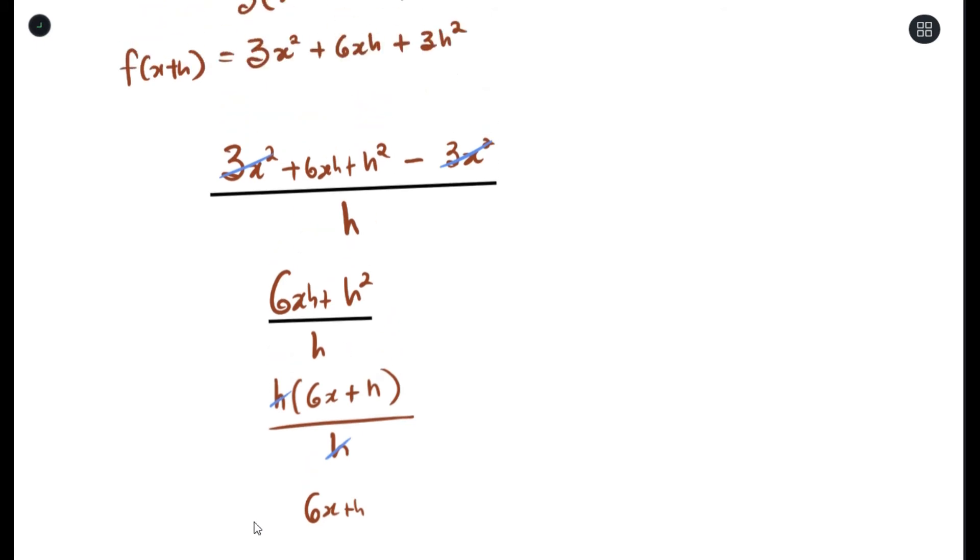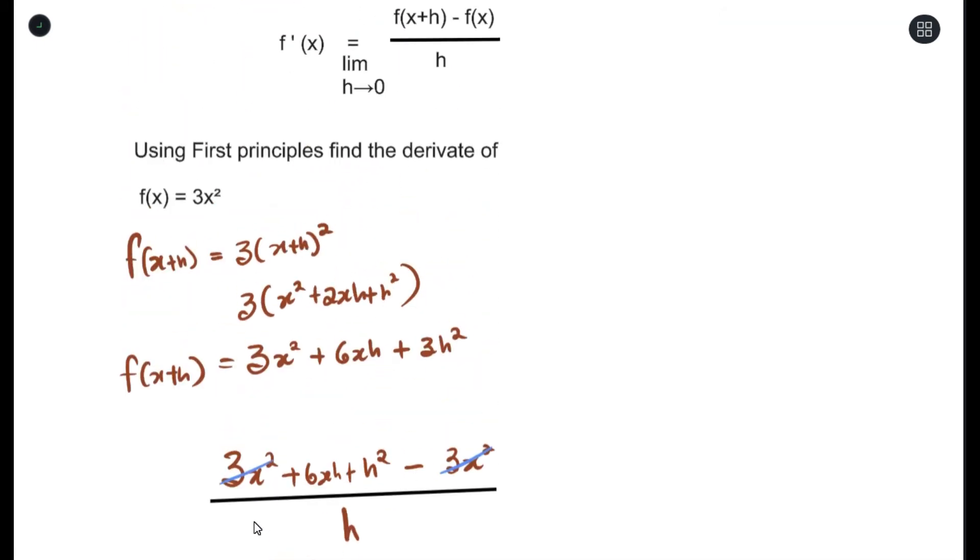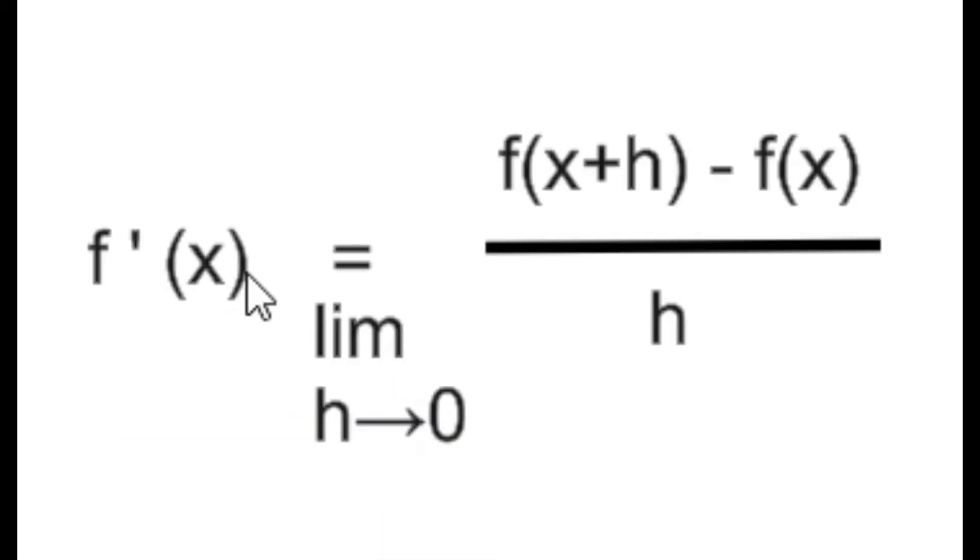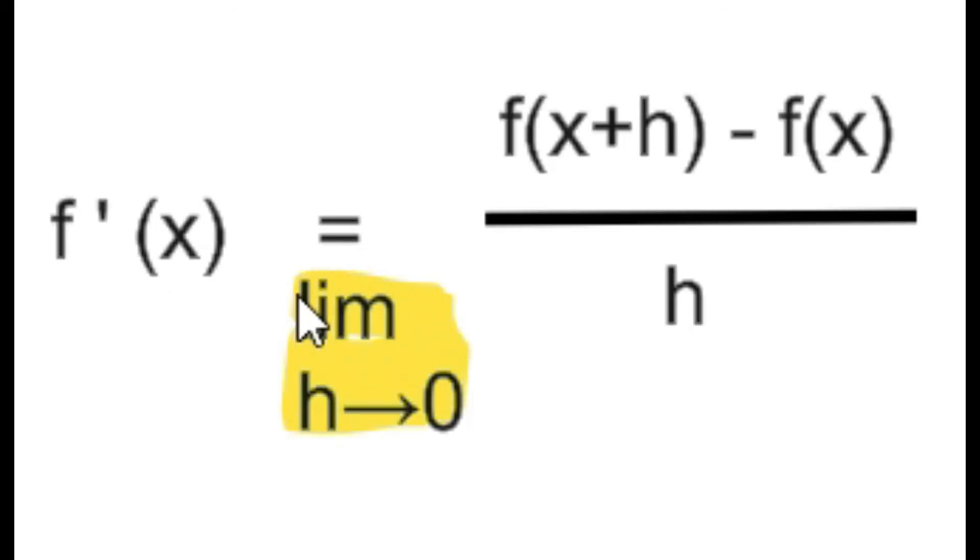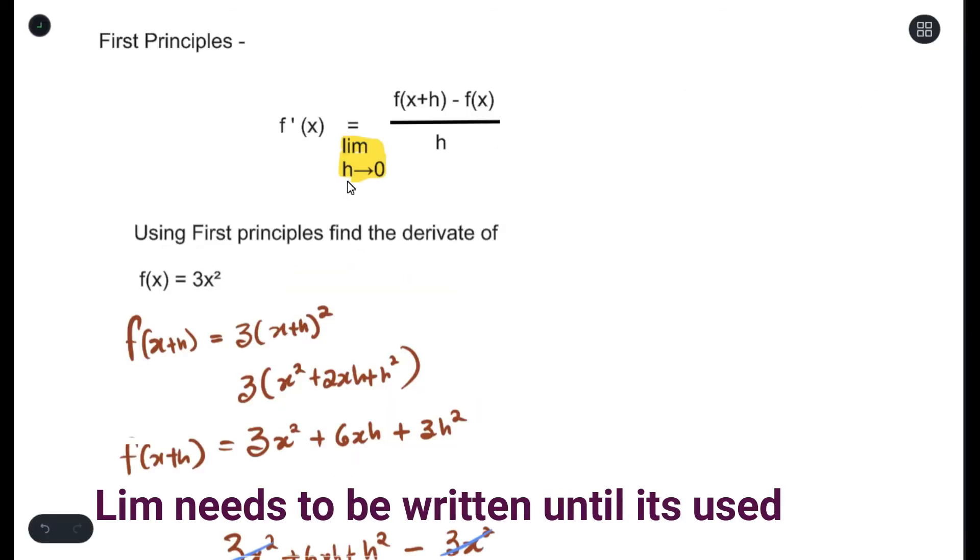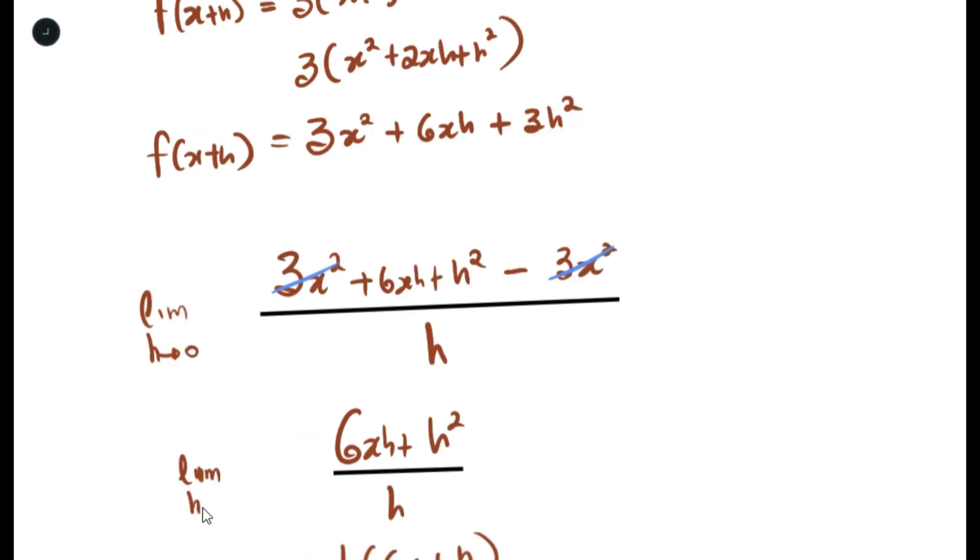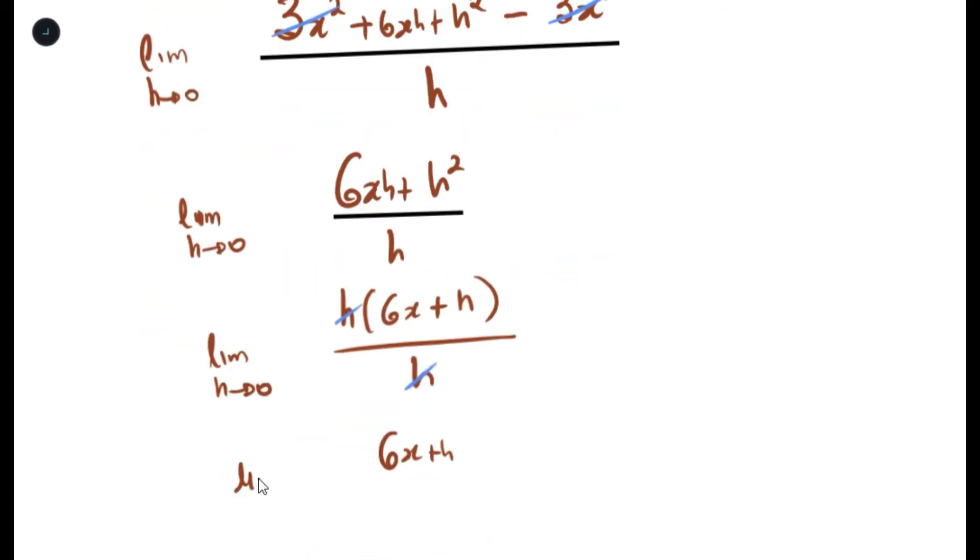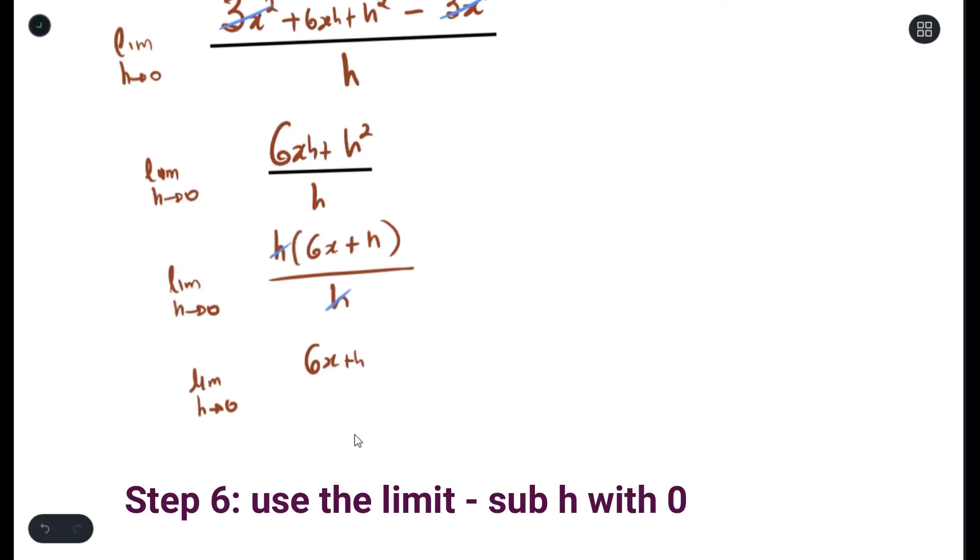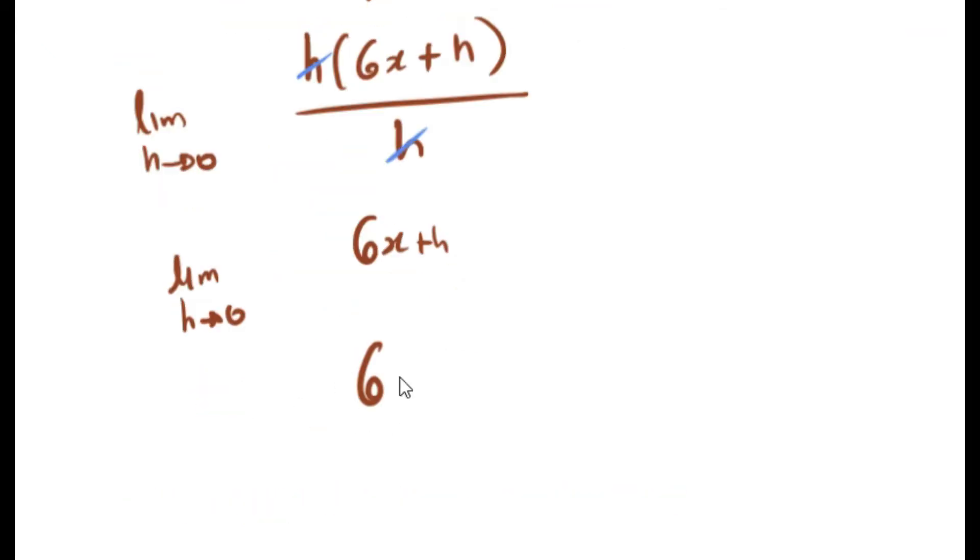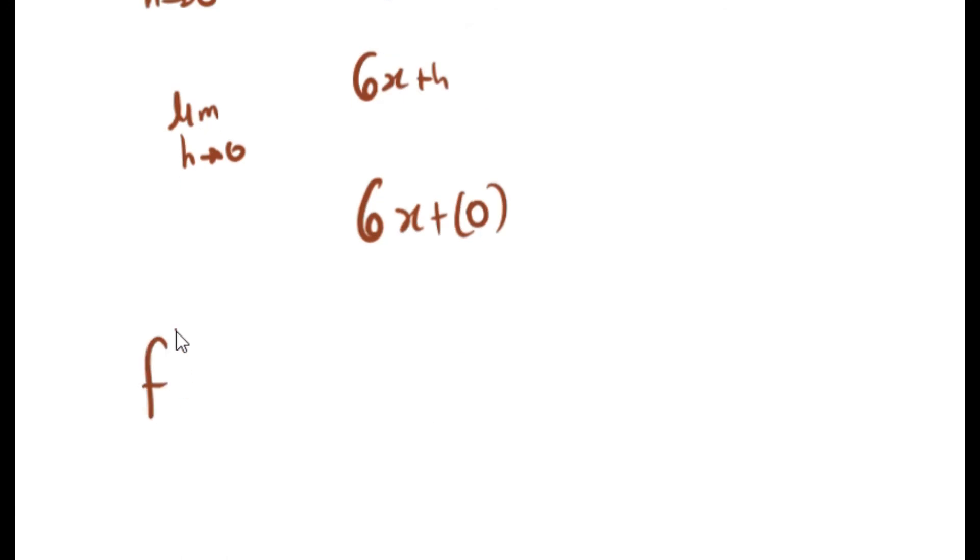There's something you need to do when answering this question. Whenever you're using first principle, the formula here, you can see there is a limit at the bottom over here. You must always write this limit for every step until you use it. So one thing I missed, I need to be writing limit h tends to 0. I could now finally use my limit by substituting h as 0. And therefore, my derivative would be 6x.